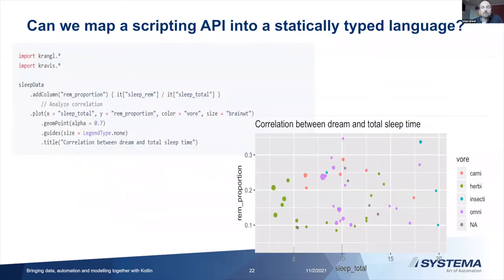The way Kravis works is surprisingly similar to ggplot in R. You have your data, do some table manipulation — here adding a column 'rem_proportion' calculated from sleep behavior data — then call the 'plot' function where you map columns onto visual attributes: x, y, color, and size. Then you define what geometries to include, configure the guide display, and add a title. With just this tiny piece of code you can build a visualization that correlates REM proportion to total sleep time while also showing food preference for each species.